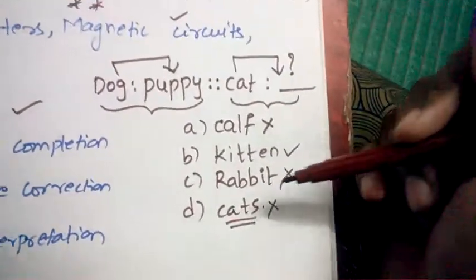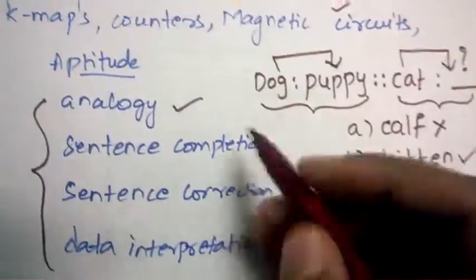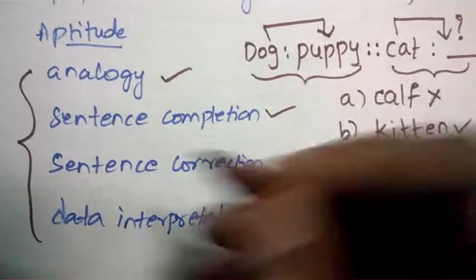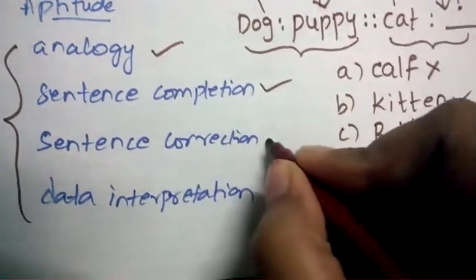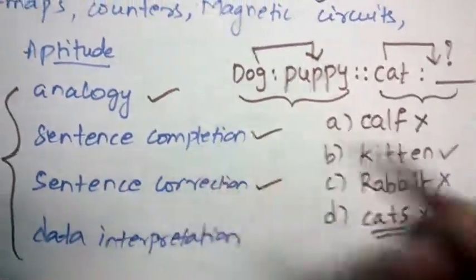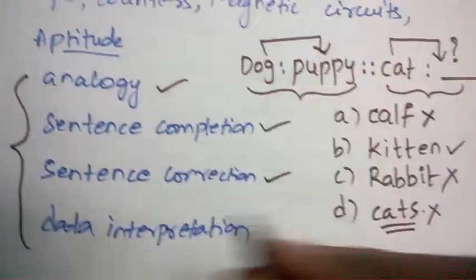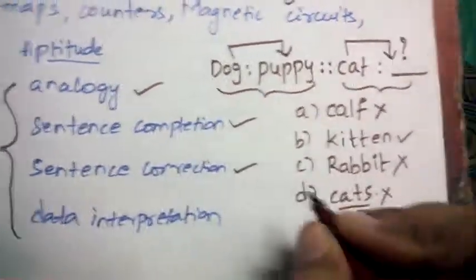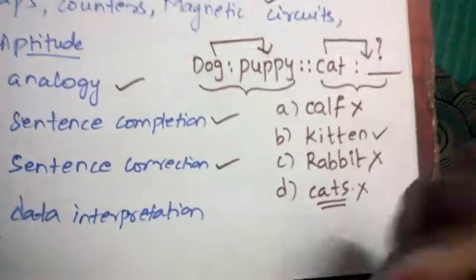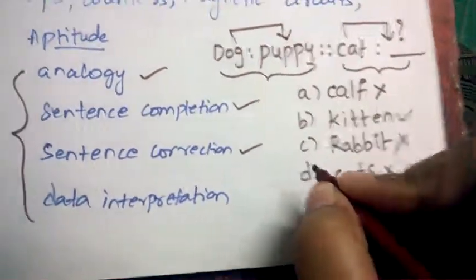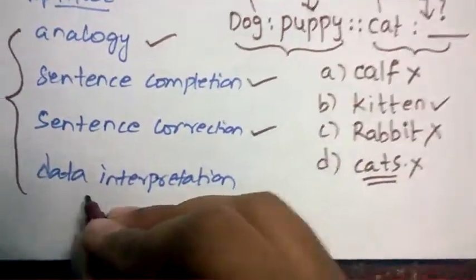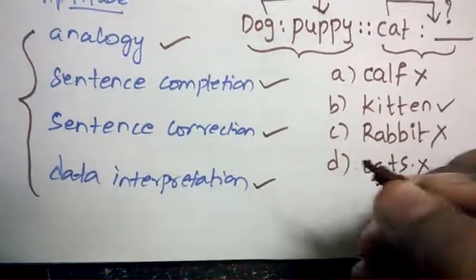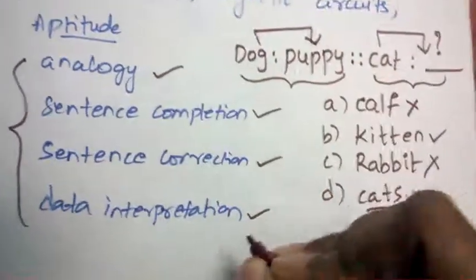And sentence completion is also important, sentence correction is important. Coming to sentence completion, they will be asking to complete the sentence. Sentence correction means there will be an error in the sentence and you need to correct it. And data interpretation - these are the four very important aptitude topics.